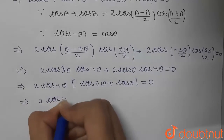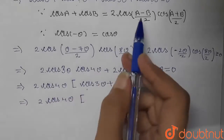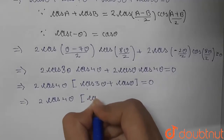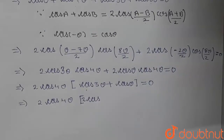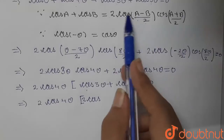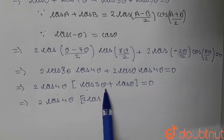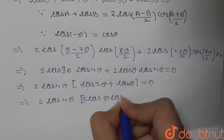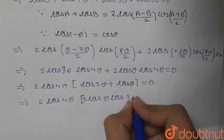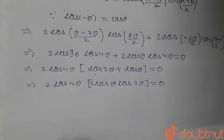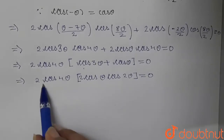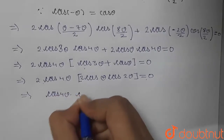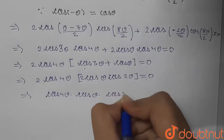Factoring out 2·cos 4θ, we are left with cos 3θ + cos θ. Applying the cos A + cos B identity again: cos 3θ + cos θ = 2·cos((3θ−θ)/2)·cos((3θ+θ)/2) = 2·cos θ·cos 2θ. So the full expression becomes 4·cos 4θ·cos θ·cos 2θ = 0, giving cos 4θ·cos θ·cos 2θ = 0.